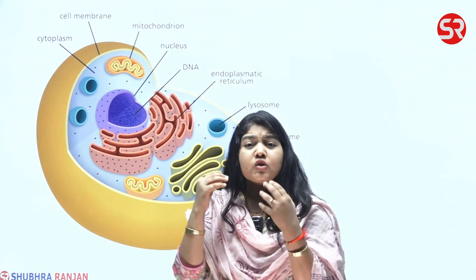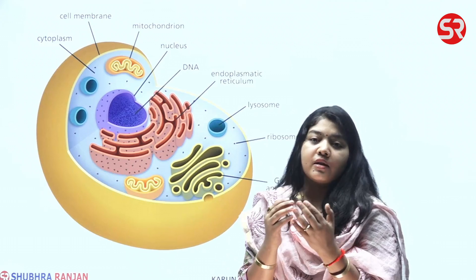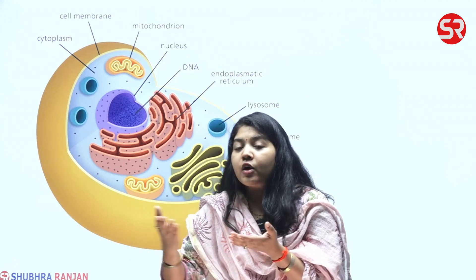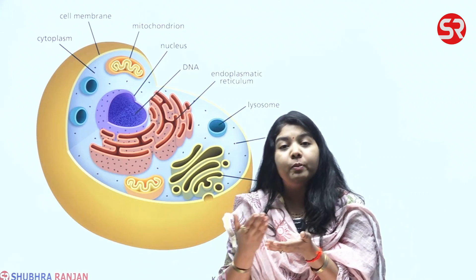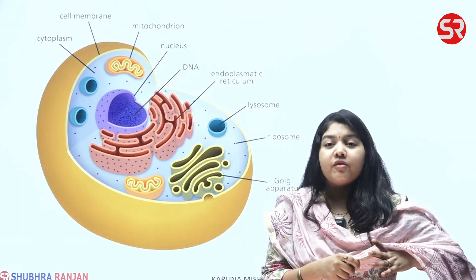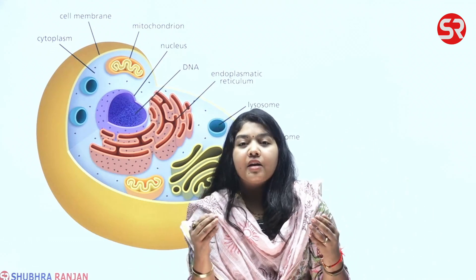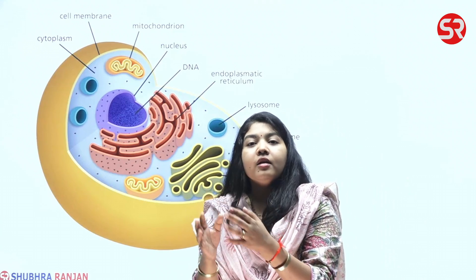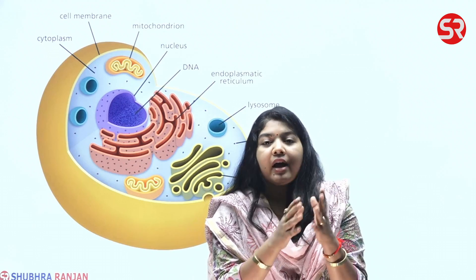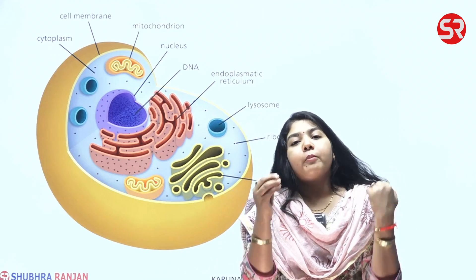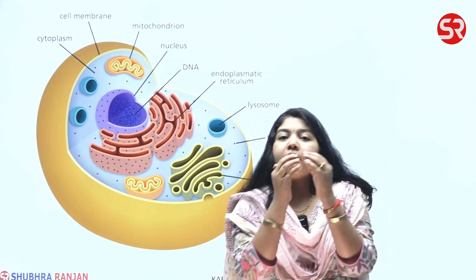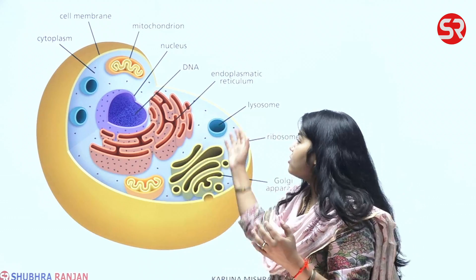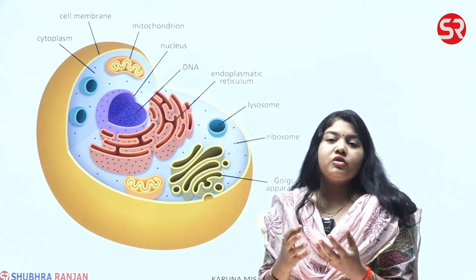The cell membrane also gives structure to the cell. It forms the outer covering so that in the liquid or jelly-type substance called cytoplasm, the various cell organs can survive. In plain terms, a healthy cell consists of three things: cell membrane, nucleus or DNA, and cytoplasm. If any cell has these three components — cell membrane, cytoplasm, and some form of DNA or genetic material — it will be termed a functional cell.